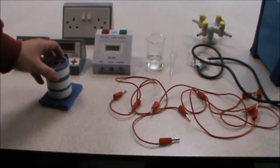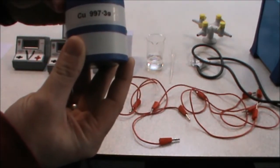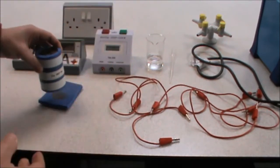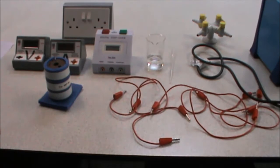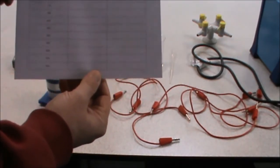Step one of the instructions tells us to measure and record the mass of the copper block. This has already been done for us and the mass has been recorded on the front of the copper block. You need to make a note on your results table of the mass of the copper block.